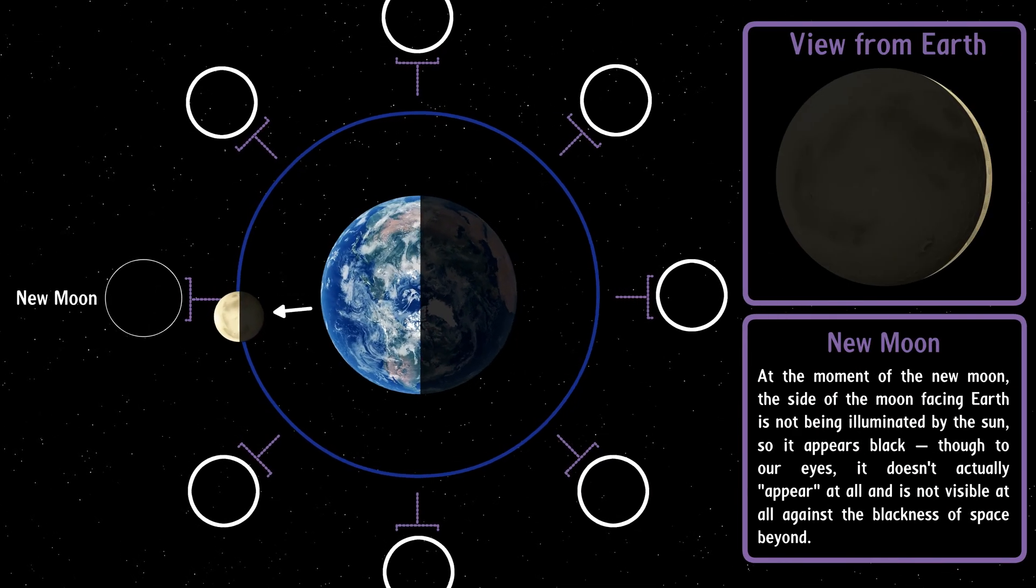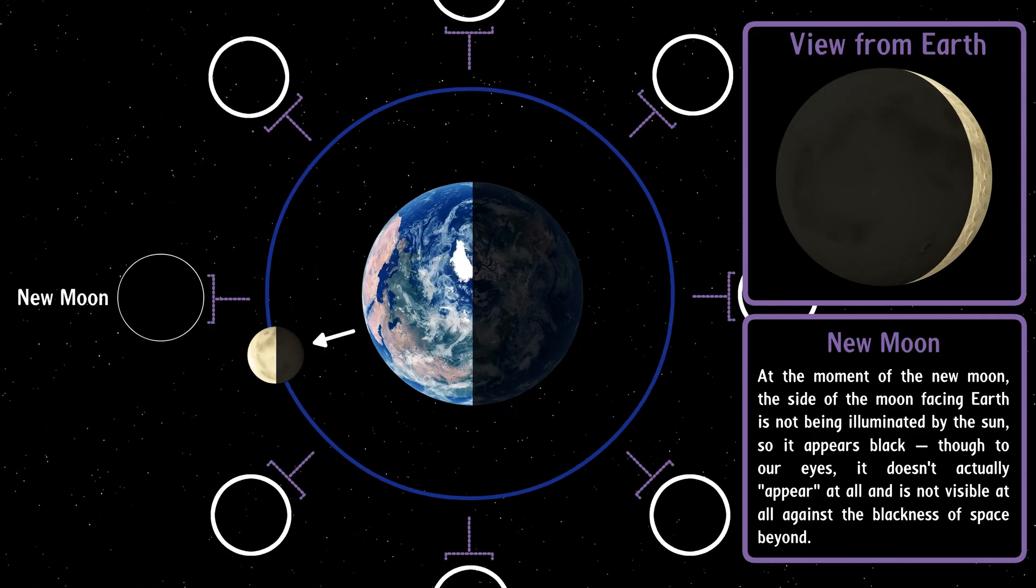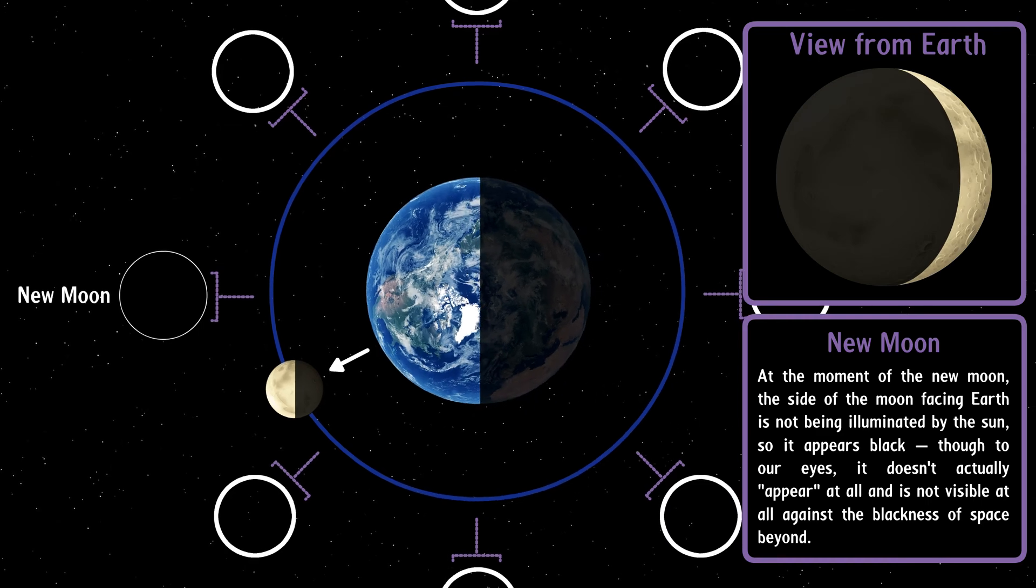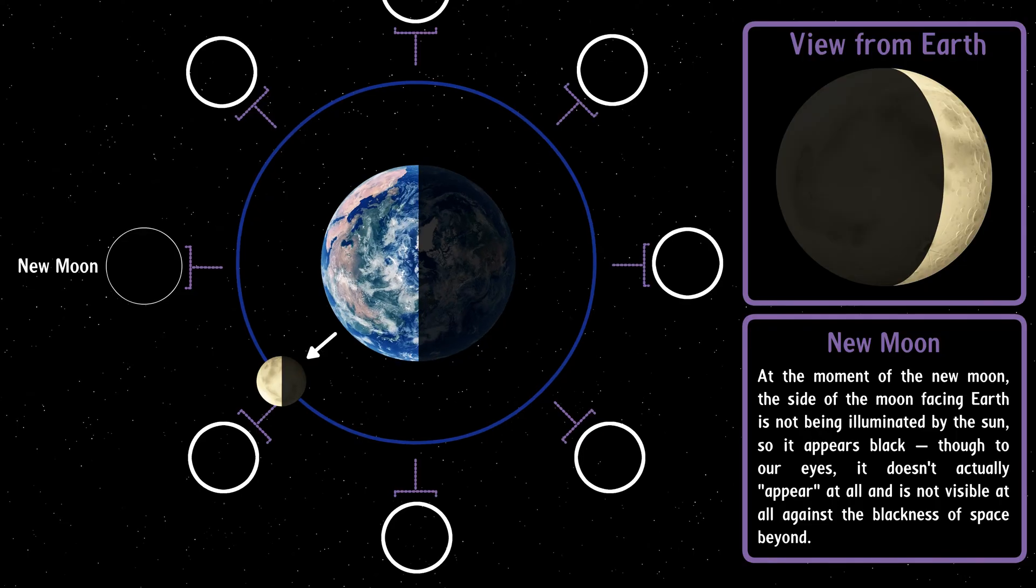New moon. At the moment of the new moon, the side of the moon facing Earth is not being illuminated by the sun, so it appears black. Though to our eyes, it doesn't actually appear at all and is not visible against the blackness of space beyond.